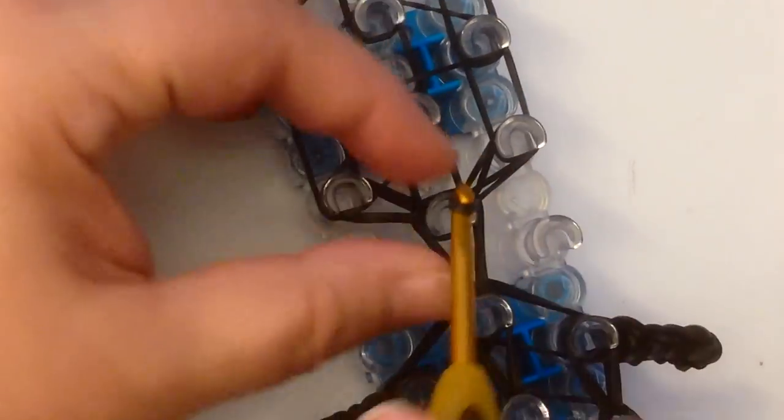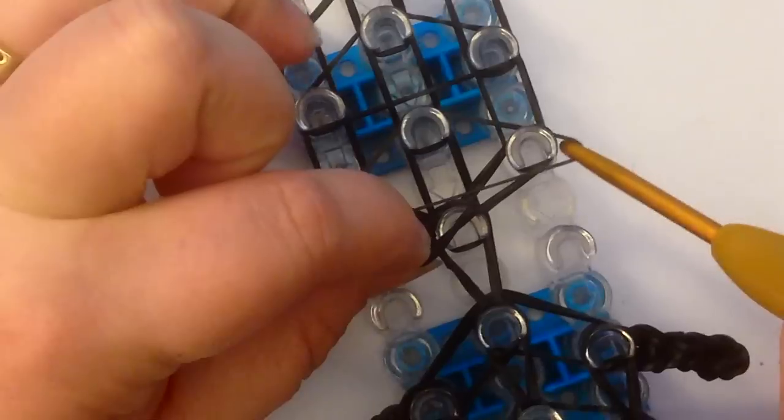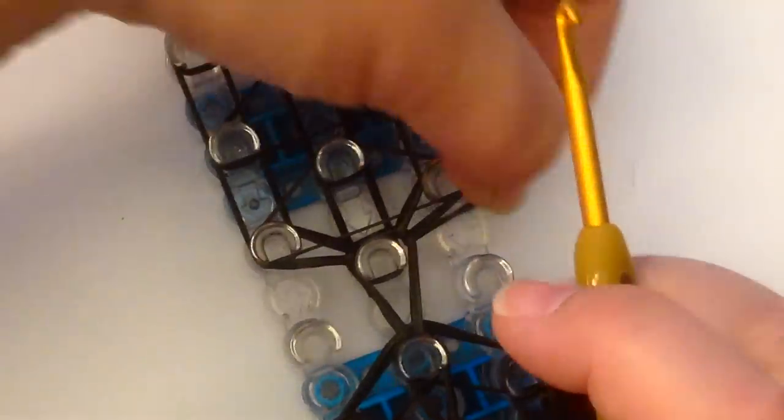And then we're going to put this one back on so that you have all four of them on there. But then we're going to take these two off, hold it, move the crossover band over, and put those back.